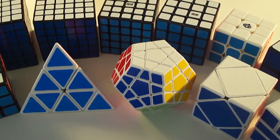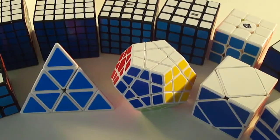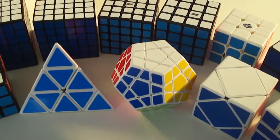Here I have my mains: 2x2 through 7x7, Square-1, Skewb, Megaminx, Pyraminx, and 3x3 OH.